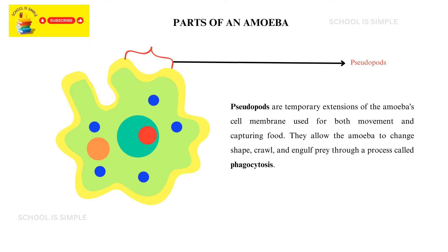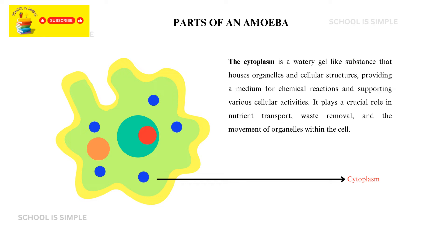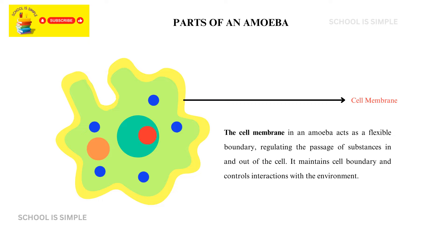Pseudopods are temporary extensions of the amoeba's cell membrane used for both movement and capturing food. They allow the amoeba to change shape, crawl, and engulf prey through a process called phagocytosis. The cytoplasm houses organelles and cellular structures, providing a medium for chemical reactions, nutrient transport, waste removal, and the movement of organelles. The cell membrane acts as a flexible boundary, regulating the passage of substances in and out of the cell and controlling interactions with the environment.